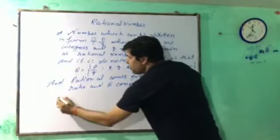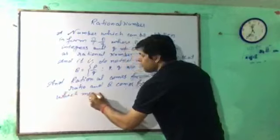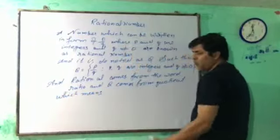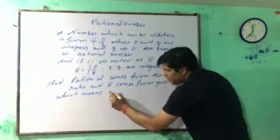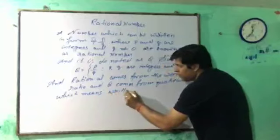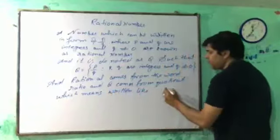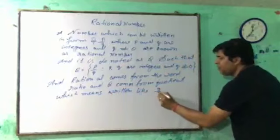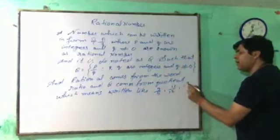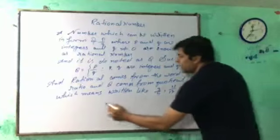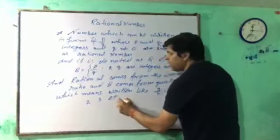Which means numbers written like 3 upon 5, 11 upon 12, minus 3 upon 1, 2, 3, etc.